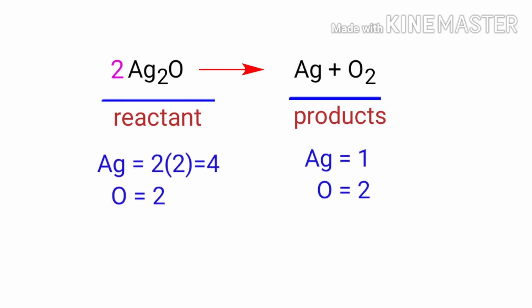The oxygen atoms are balanced. Now we need to balance the silver atoms. To do this, we need to put a coefficient of 4 in front of Ag.